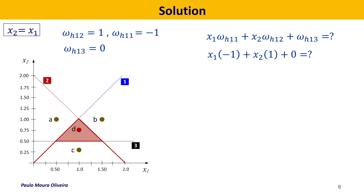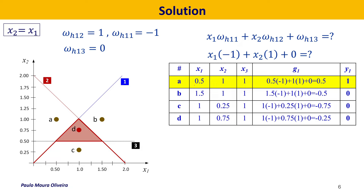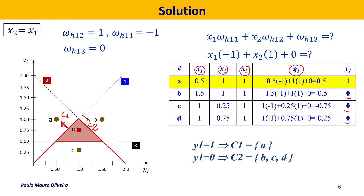We replace the weights into the equation and fill the table with coordinates for points A, B, C, and D, where x3 is the bias. The output is one only for point A, meaning it is the only point that belongs to class 1 for this discriminative line. All the others — B, C, and D — are on the other side of the line, so they belong to class 2, with output value zero.